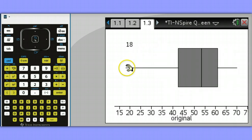If we hover over, we can see the minimum, quartiles, median, and maximum.